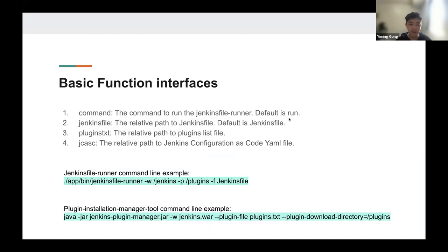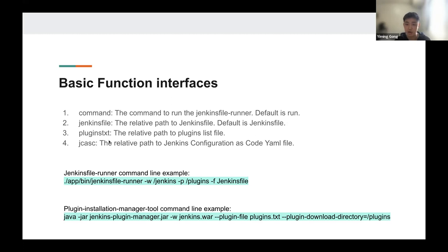Our function interface is pretty simple. You only need to point out the running options and the relative paths of the Jenkins file, JCS, the YAML file, and the plugin installation list file in your repository. The command means how you want to run the Jenkins file runner — the default command is 'run' and another supported one is 'lint'. The Jenkins file input means the relative path to the Jenkins file in your repository, with a default of 'Jenkinsfile'. The third one is plugins.txt, which means the relative path to the plugins list file. And JCASC means the relative path to the Jenkins configuration as code YAML file.